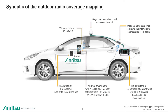If you need to focus on outdoor radio coverage mapping, the synoptic is as follows. The NEON tracker has to be fixed onto the driver's belt. It is paired via Bluetooth to the Android device. The Android device shares its Wi-Fi hotspot with the MS-2090A, which can be at the rear of the car. The geolocation of the system will be assured by the GPS of the Android device.